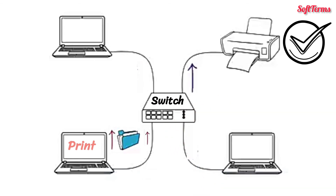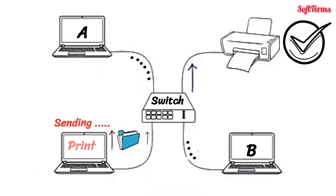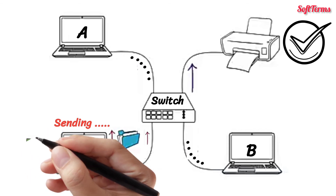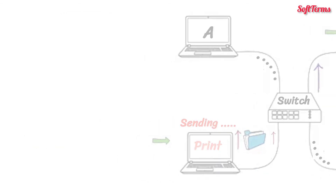Moreover, when your computer is busy sending a file to the printer, computers A and B can also communicate with each other without affecting the computer-printer link. That is, switched connections allow simultaneous communication. On the other hand, hubs allow only one device to communicate at a time.